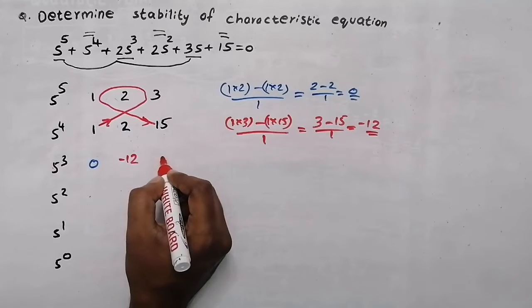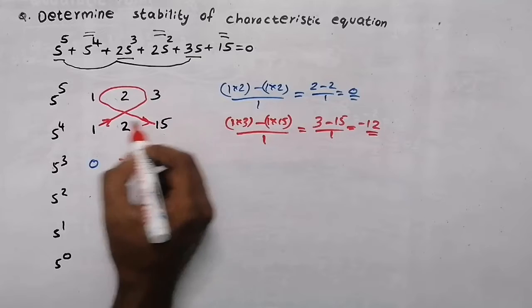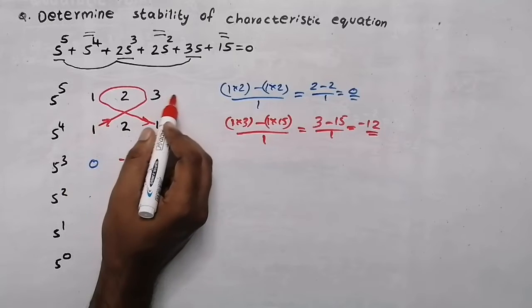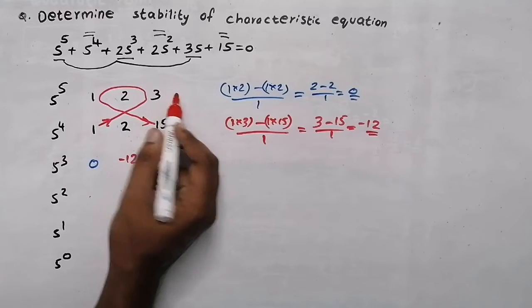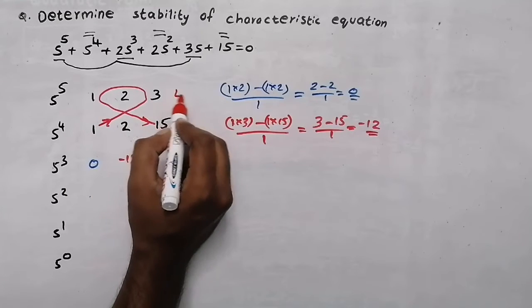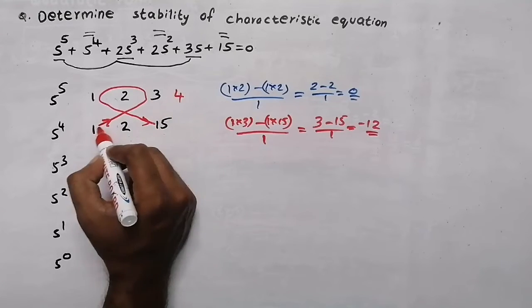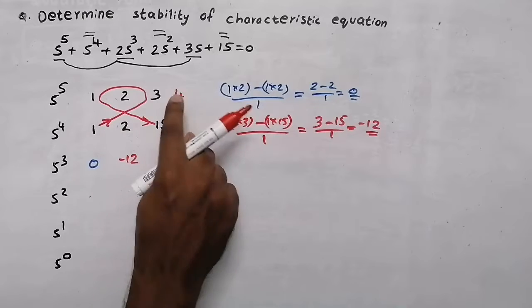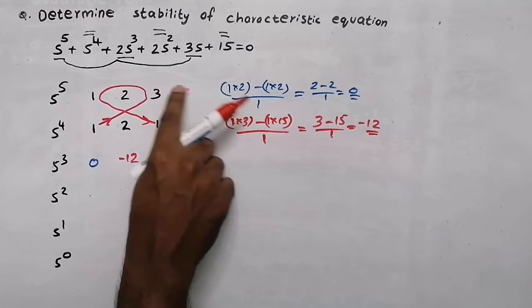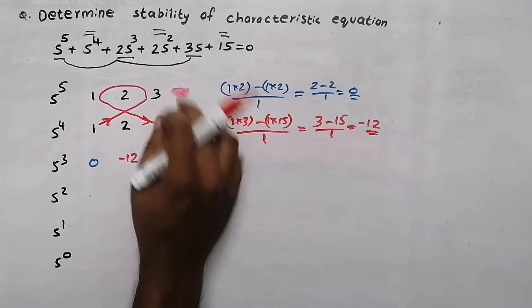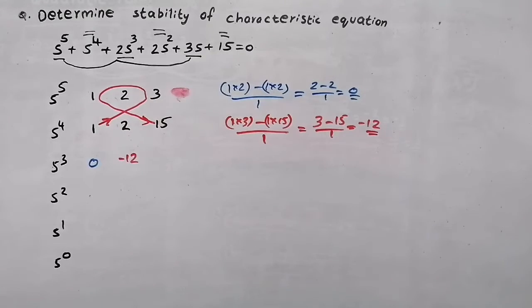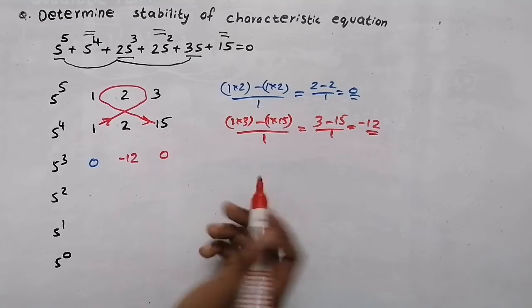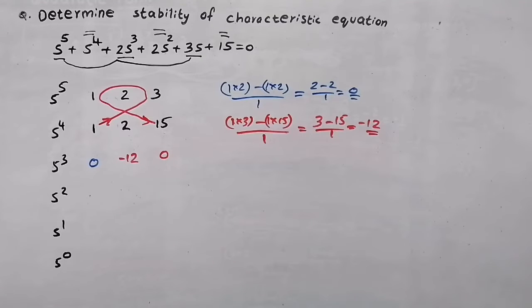Then the next value will be 1 into 0. There is no value here. If there was a value here, we would do the multiplication like this. But in this question there is no value here, so we can write 0 here.